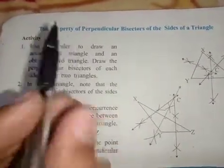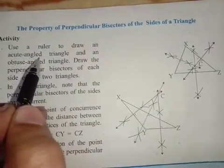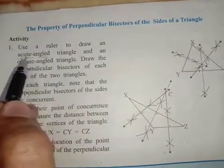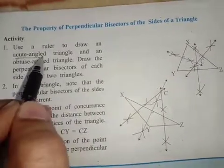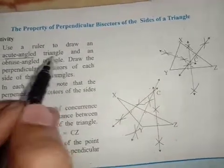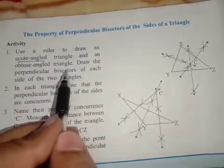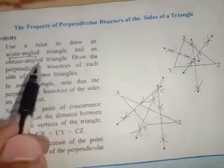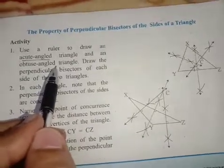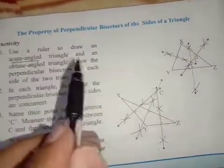Use a ruler to draw an acute angle triangle. You all know about acute angle — acute angle means greater than zero degrees and less than 90 degrees. And obtuse angle means greater than 90 degrees and less than 180 degrees, so obtuse angle is greater than a right angle.